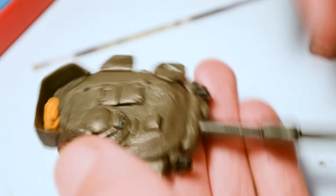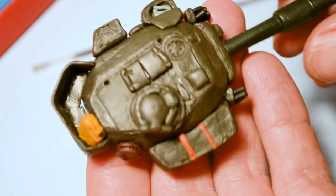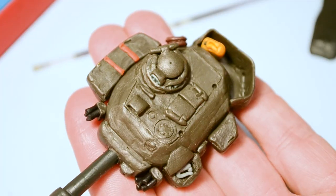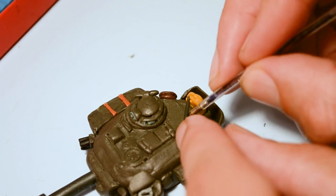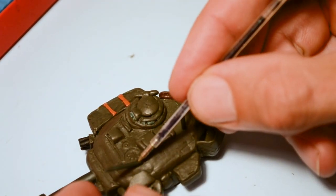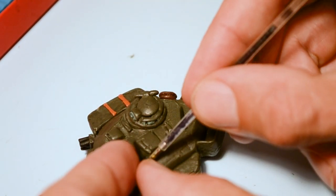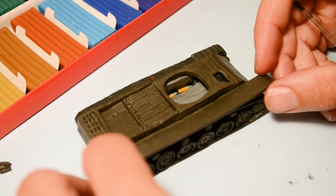Israel also captured about 30 Jordanian Centurion tanks from a total of 90 in Jordanian service. All Israel's Shot tanks were upgraded with a more efficient Continental diesel engine, also used in the M48 and M60 tanks. Upgrades also include new Allison transmission.